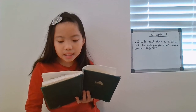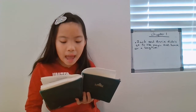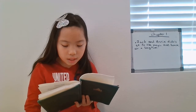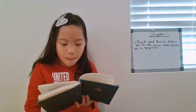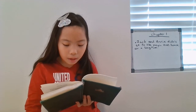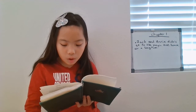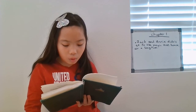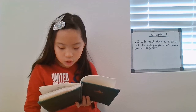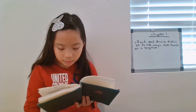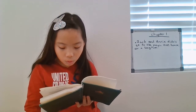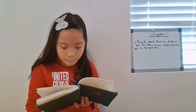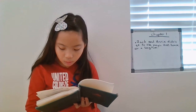Morgan! Annie shouted. Jack held his breath, waiting to see the enchantress at the tree house window. But Morgan did not appear. Annie grabbed the rope ladder and climbed up. Jack followed. When they climbed inside the tree house, Jack saw something lying on the floor. It was a scroll, rolled up and tied with a red velvet ribbon.